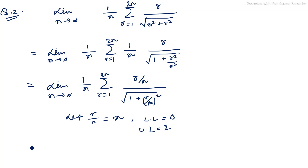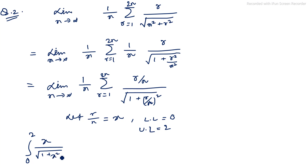So the definite integral becomes ∫₀² x/√(1 + x²) dx. We have now converted this infinite series into a definite integral. Now let's solve this definite integral using substitution.